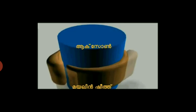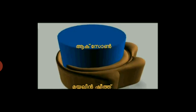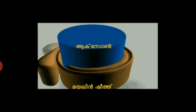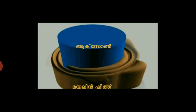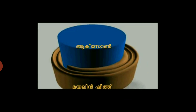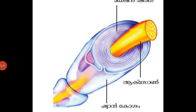The Schwann cells or oligodendrocytes repeatedly encircle the axon and thus form a membrane around the axon — and in this way myelin sheath is formed. Now what is the nature of this myelin sheath? In the picture you can see it has a shiny white color, and it is made up of a lipid or fatty substance called myelin. That is why its name is myelin sheath.